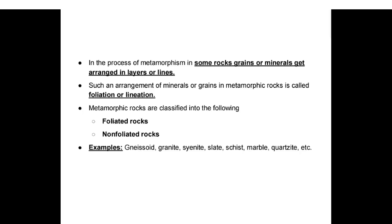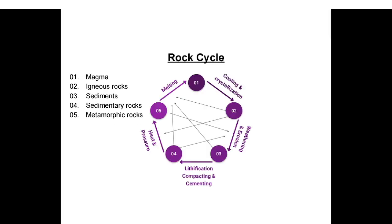Metamorphic rocks are classified into foliated rocks and non-foliated rocks. Examples include gneiss, granite, cyanite, slate, schist, marble, and quartzite. The rock cycle: stage one — magma cooling and crystallization (igneous rocks); then weathering and erosion produces sediments; lithification, compaction, and cementation forms sedimentary rocks; heat and pressure causes metamorphism forming metamorphic rocks; then melting returns to magma.